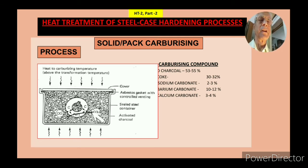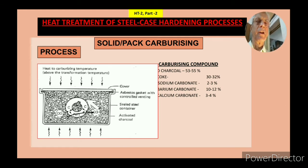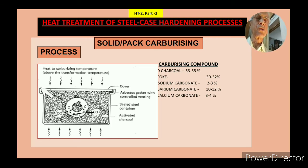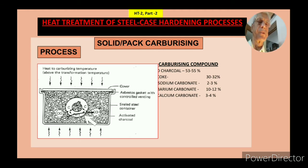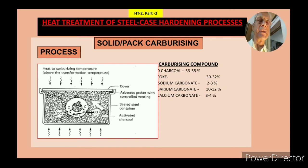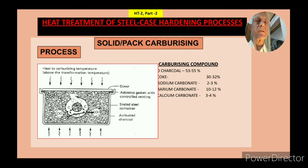After packing, the part is placed in the center of the box. All sides and the lid are sealed with refractory paste so there is no incoming or outgoing air — it remains totally sealed. This box is then kept in a furnace; any type of furnace can be used, even a muffled furnace. The box is heated from all sides, as shown by the heat waves illustrated here.